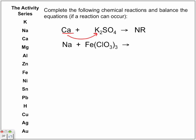Next example: sodium and an iron compound. Metal-metal — we look at the activity series. Sodium is higher and iron is lower. Will sodium knock out the iron and leave the iron lonely? Yes it will, because sodium is higher in the activity series. And of course, we have to balance the equation.